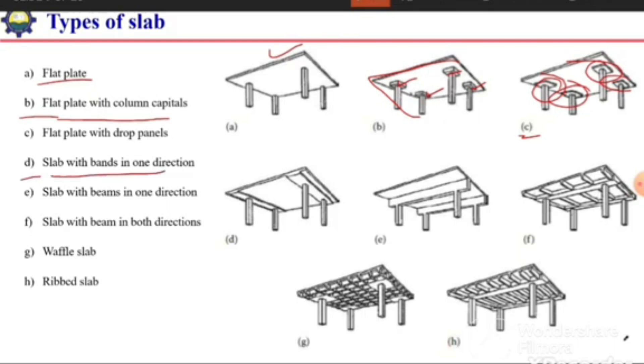The fourth is slab with bands in one direction. If we have bands in one direction, then it will be termed as slab with band in one direction and it will be considered as one-way.